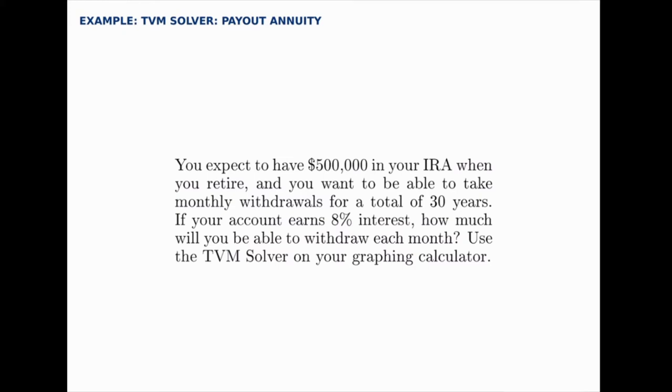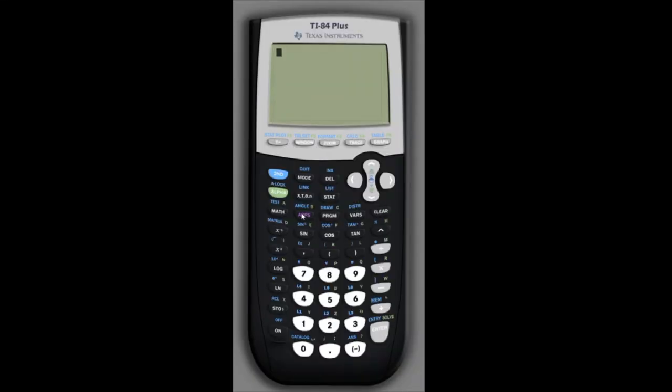Let's go over to the calculator and open the TVM solver. That's found under Apps, Finance, TVM Solver. In this case, we're looking for the payment amount, the withdrawal payments from this payout annuity.